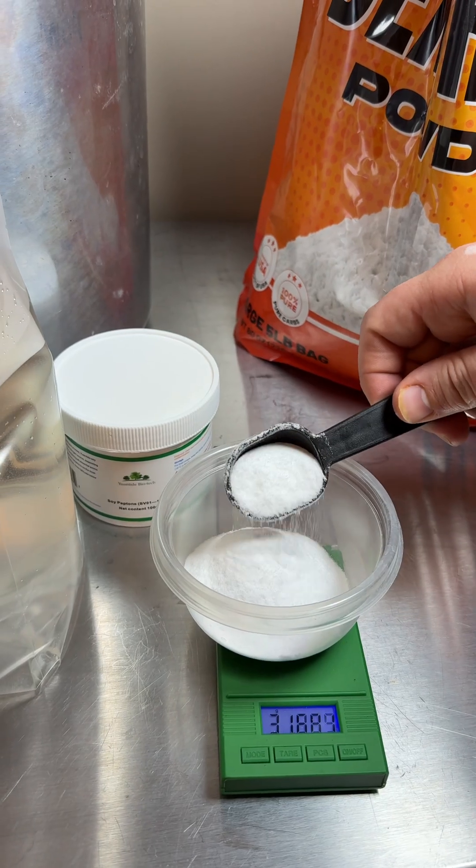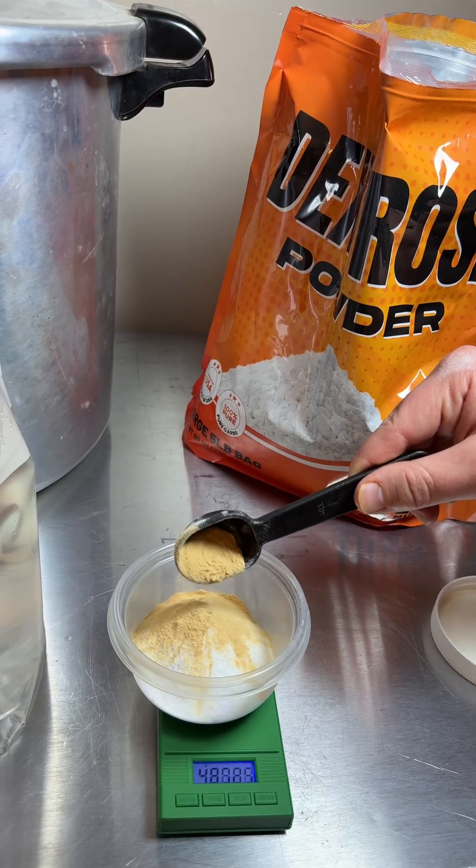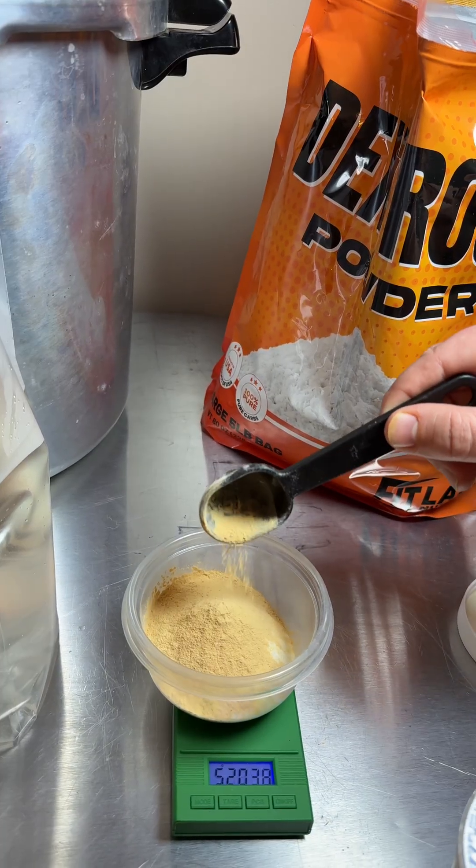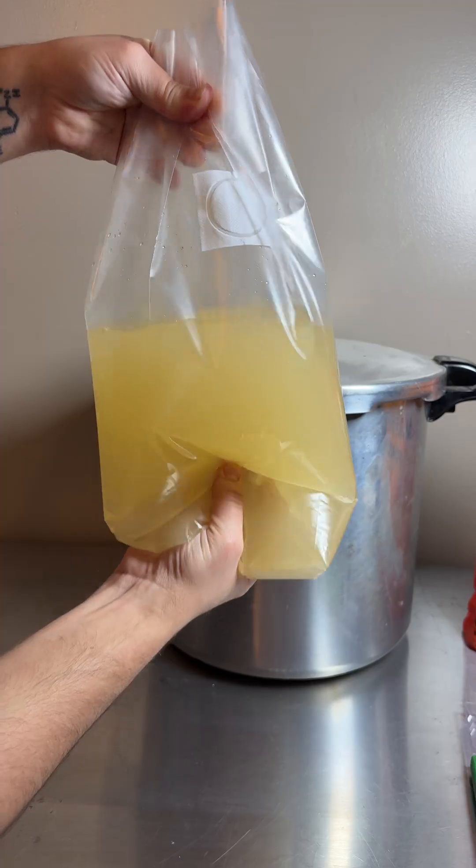First, I added 2,400 milliliters of warm water to the filter patch bag, and then I weighed out 48 grams of dextrose powder and 4 grams of soy peptone powder and added that to the filter patch bag.